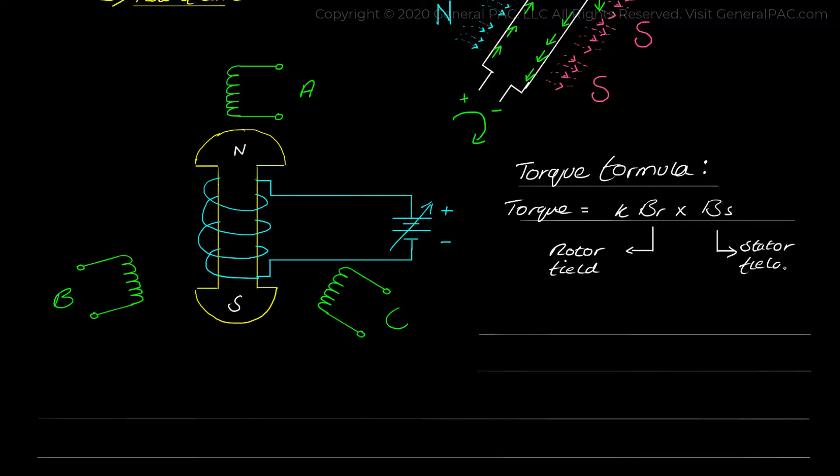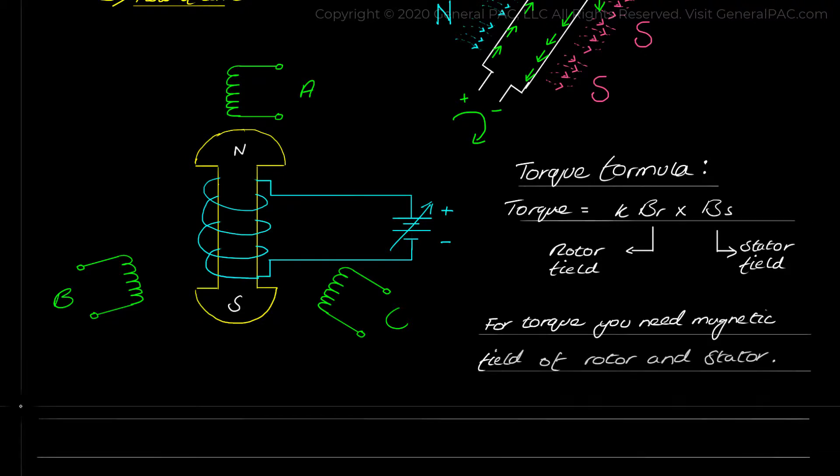The formula explains that to have torque, both magnetic fields in the rotor and stator must be present. Otherwise, there is no rotation of the rotor. This phenomenon is used in AC induction motors.